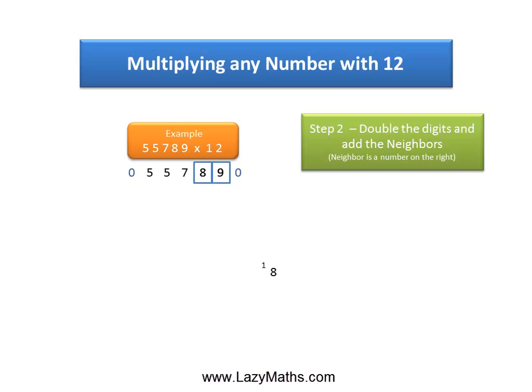Continuing with the next pair, 8 and 9. Double of 8 is 16 plus 9 gives us 25. Again, the 2 of 25 is written in the carryover position.